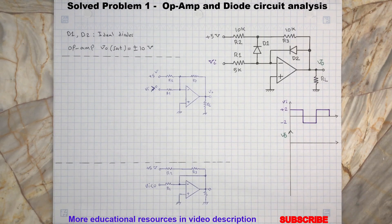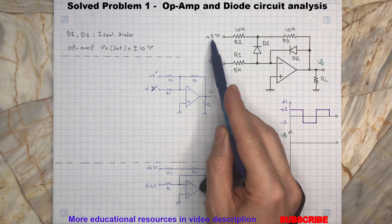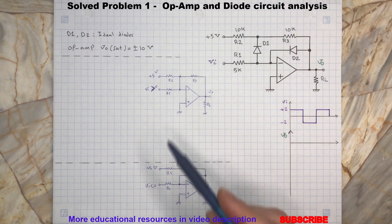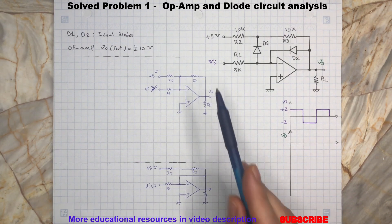Now back to this circuit. As you can see here, this is an inverting op-amp amplifier with two input sources. One source is a constant positive 5 volts and the other source is Vi with a square wave signal shown below.